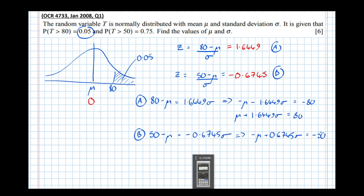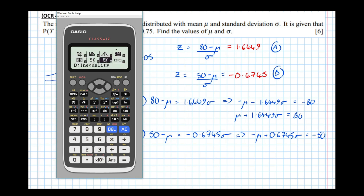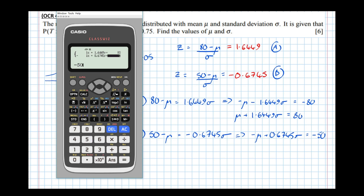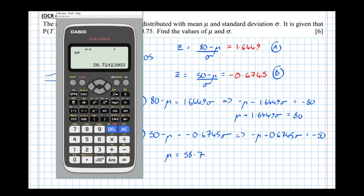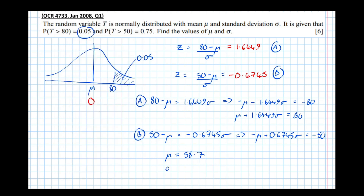On the calculator, going into simultaneous equation mode with two unknowns — letting x be mu and y be sigma. The first equation: 1 mu plus 1.6449 sigma equals 80. The second: minus 1 mu plus 0.6745 sigma equals minus 50. Solving gives mu equals 58.7 and sigma equals 12.9, both to three significant figures. Put a box around it to let the examiner know that's your final answer.